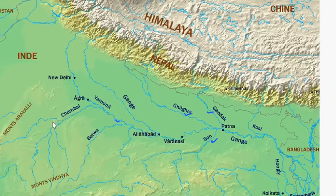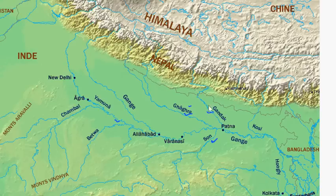The rivers which join from the upper side are left bank tributaries. Here you can see Ghagra, Gandak, and Kosi — these rivers join the Ganga from the upper side, so these are left bank tributaries. And the rivers which join from the lower side — here you can see Son and Yamuna — these are right bank tributaries.